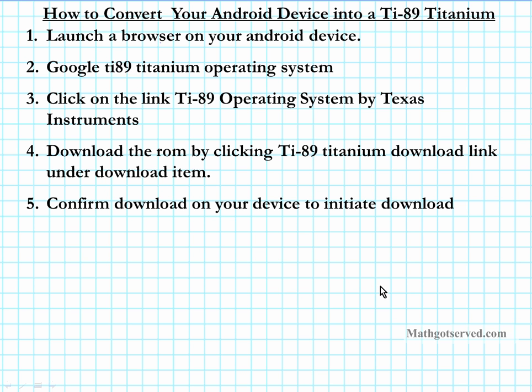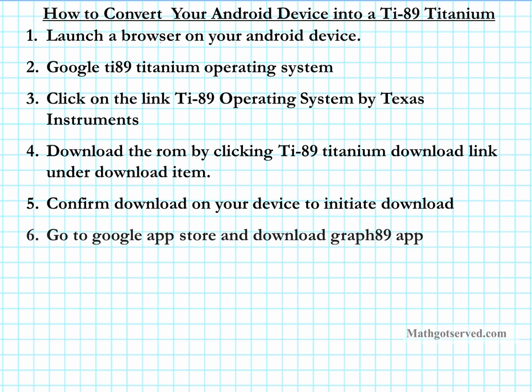What you have to do now is download an app that can actually run this operating system. You need the hardware — you have the software, now you need the hardware in virtual form. Go to the Google app store and download the Graph-89 app. In another tutorial I showed how to get the TI-83 using Andy Graph, but that one doesn't run the 89. So if you want to run the 89 operating system, you need a different app — it's called the Graph-89 app.